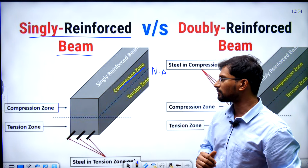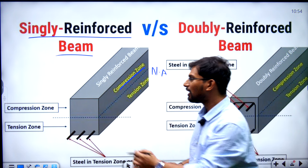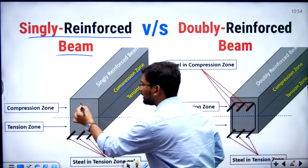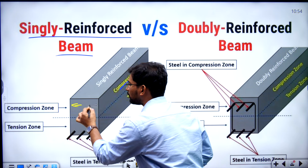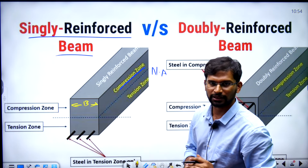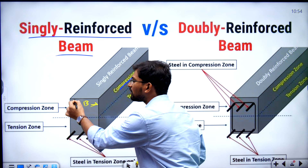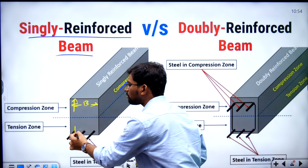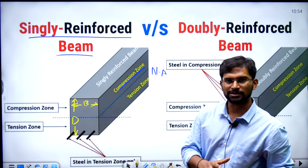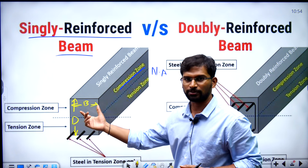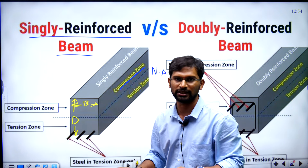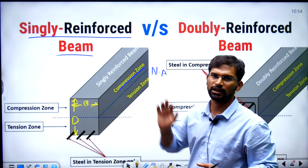So, in a singly reinforced beam, we can maintain the nominal breadth of the beam and the overall depth of the beam to maximum, with the nominal breadth only in the tension zone. It is called a singly reinforced beam.